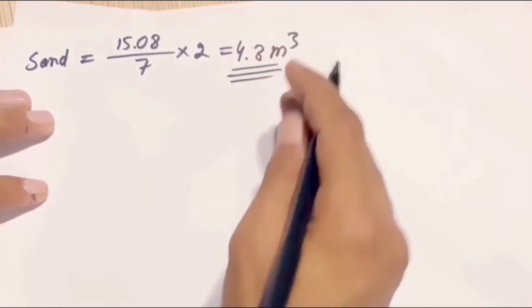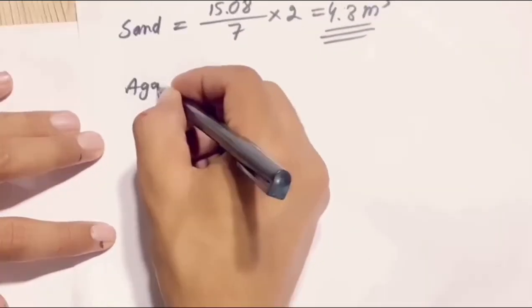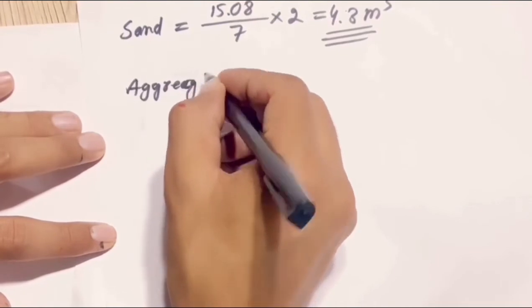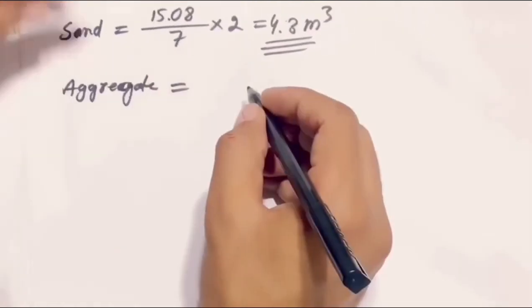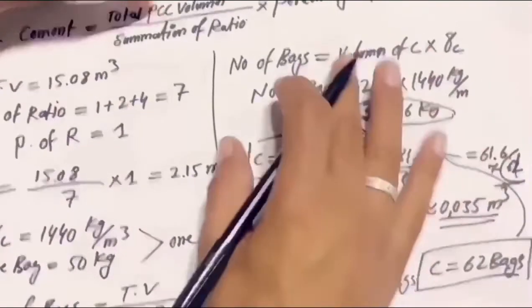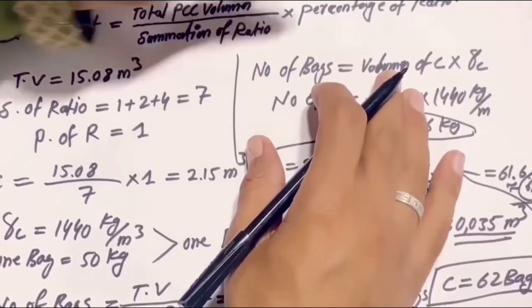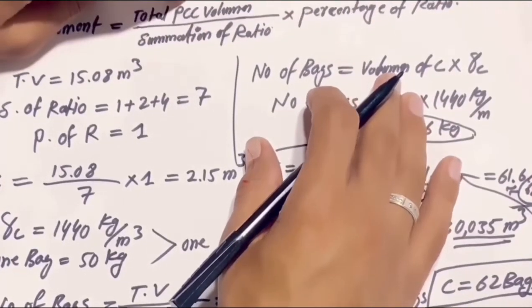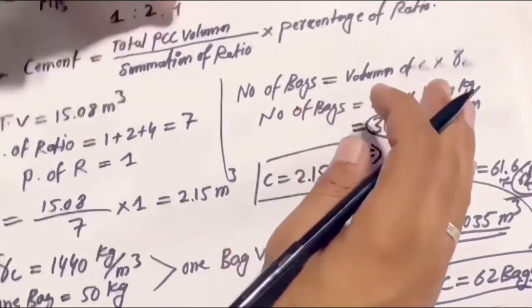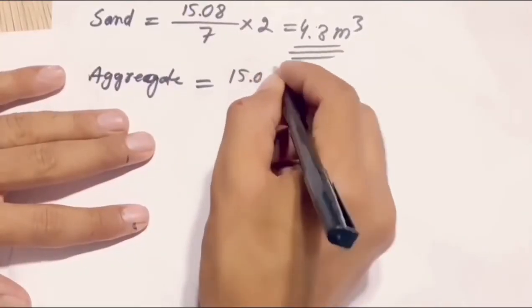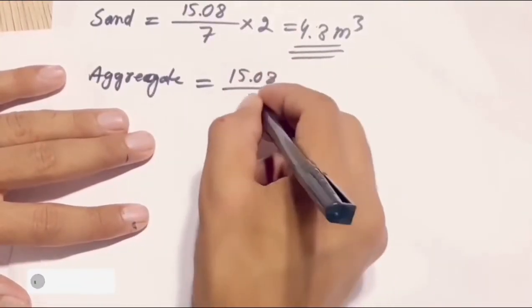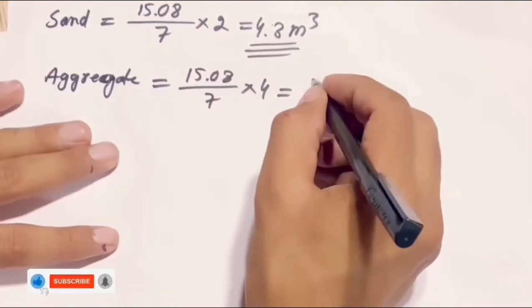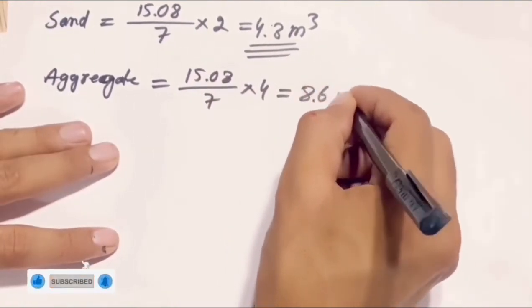Now for the aggregate quantity, it also uses the same formula. We put the percentage of ratio for aggregate, which is 4: aggregate = 15.08 ÷ 7 × 4 = 8.6 cubic meters. This is the volume of aggregate required.